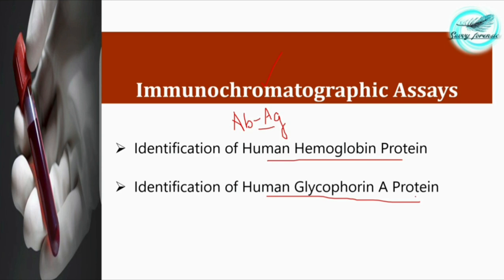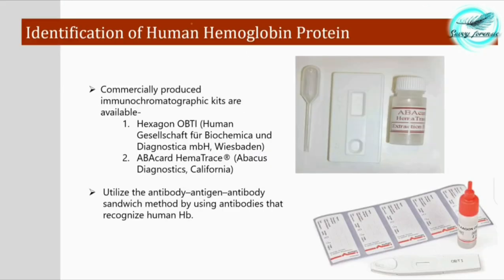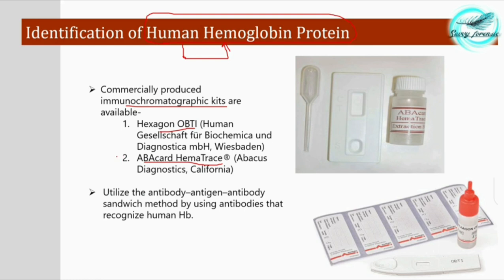Let's see how we can identify human blood with the identification of human hemoglobin protein. Human hemoglobin protein, as the name suggests, is a particular protein present only in human hemoglobin samples. There are immunochromatographic kits that work for the detection of human hemoglobin protein, like the Hexagon Opti and ABA Card HemaTrace — this is usually asked in exams. These two kits detect the presence of human blood by identification of human hemoglobin protein.